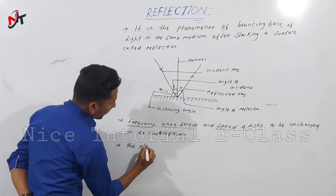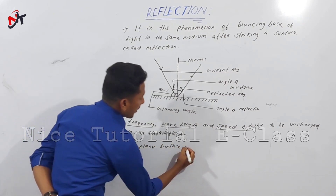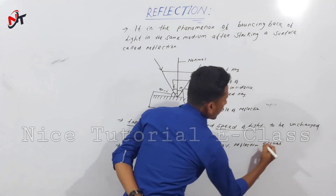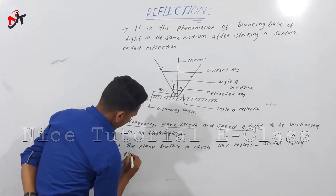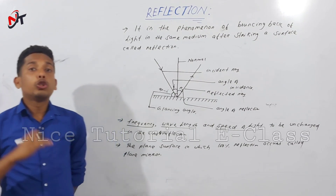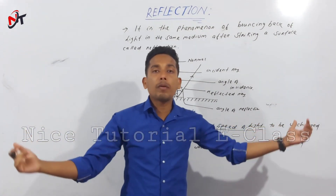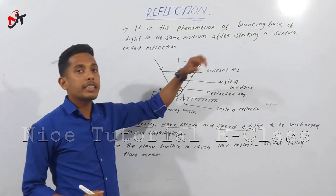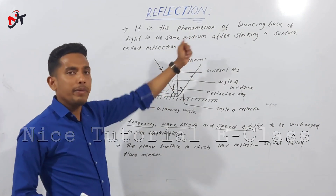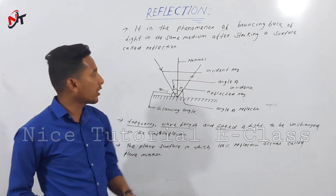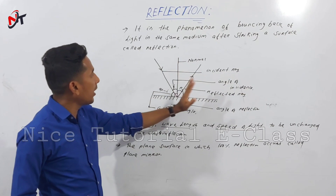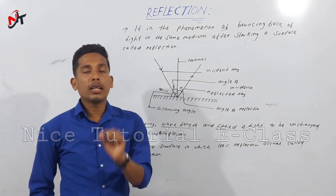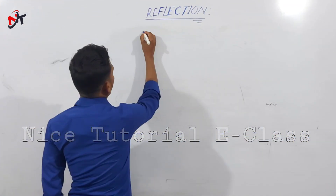The plane surface in which one hundred percent reflection occurs is called a plane mirror. The reflecting surface where 100% reflection takes place is called a plane mirror. So the reflection occurs, and the light ray comes incident, strikes, and returns back into the same medium — this phenomenon is called reflection.